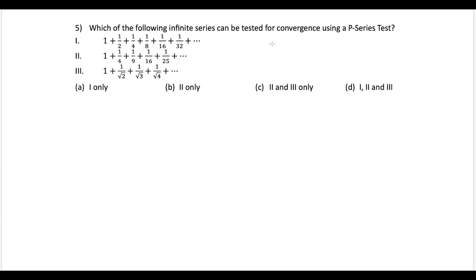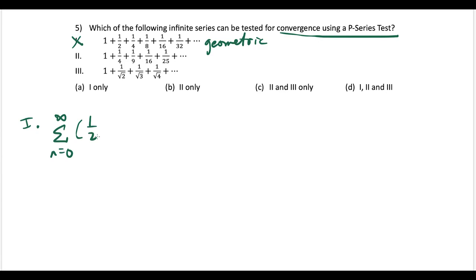Question five: which infinite series can be tested for convergence using a p-series test? For the first one, looking at the pattern, we're multiplying by 1/2 to get from one term to the next — so this is a geometric series expressible as the series from n=0 to infinity of (1/2) to the n. This is not a p-series, it's geometric, so we can't use the p-series test. One is out.